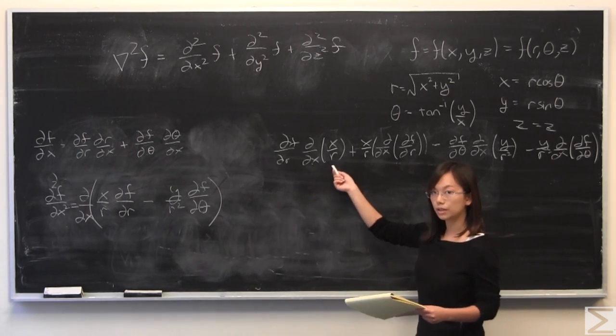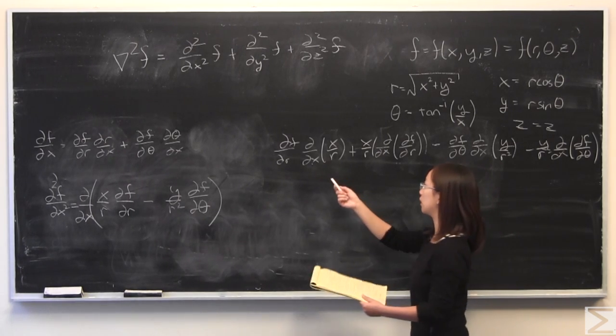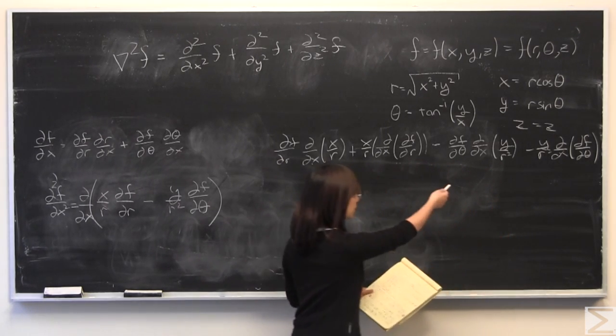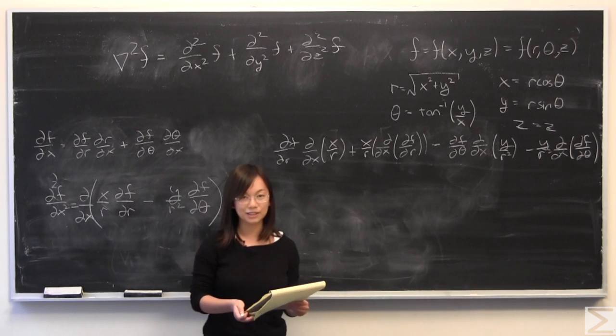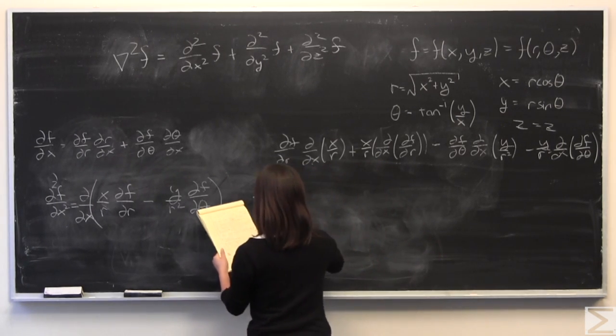We also have these terms to deal with: partial with respect to x of x over r, as well as y over r squared. But again, these are pretty simple to deal with. I'm going to go ahead and work everything out for you.